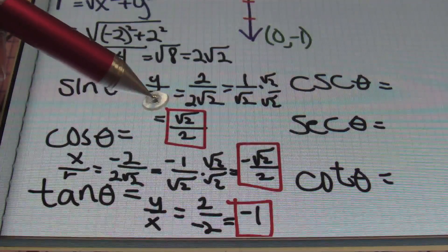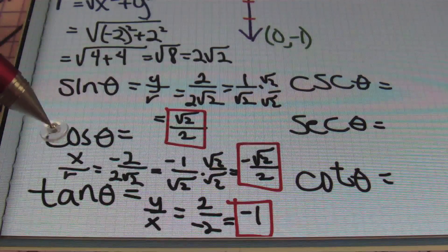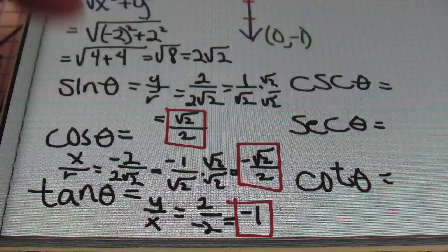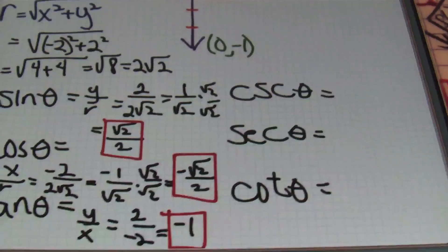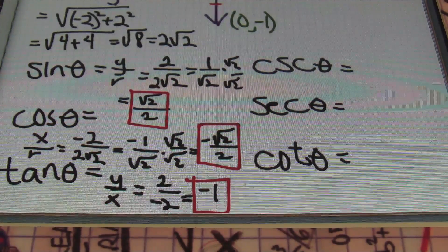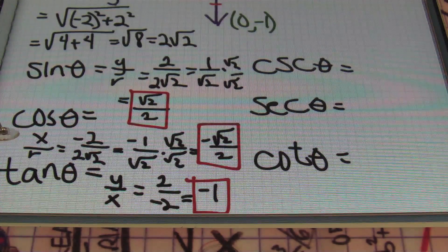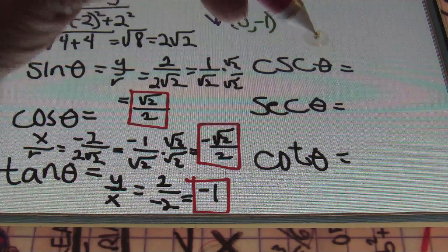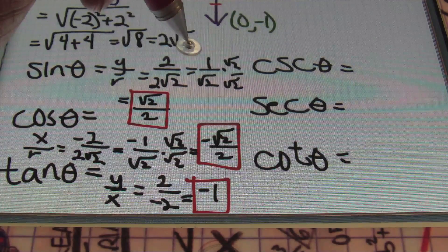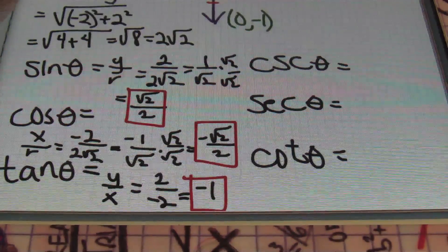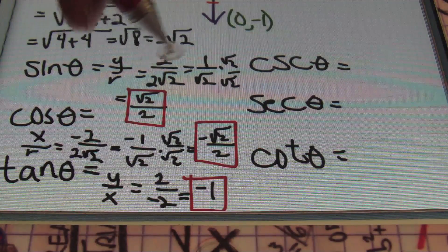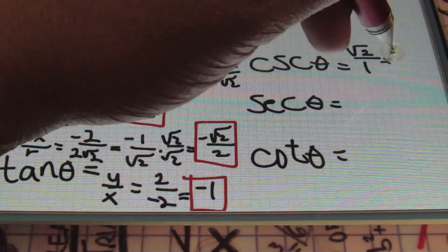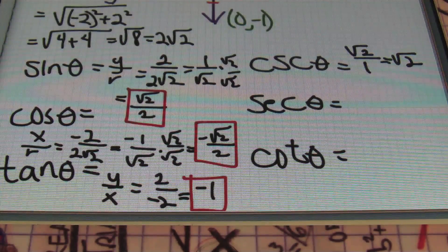So thus far, I have sine theta which equals to the square root of two over two, cosine theta equals to negative square root of two over two, and tan theta which equals to negative one. Remember that the cosecant, secant, and cotangent values are all reciprocals of those first three trig values. So what I'll do is simply flip my results. For cosecant theta, I know that initially we simplified sine to one over the square root of two, so the reciprocal of that would be the square root of two over one, which simplifies to give me a result of square root of two.